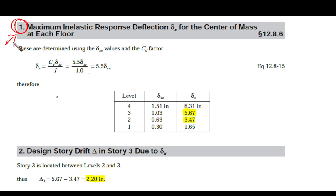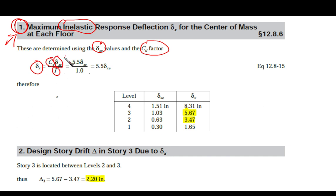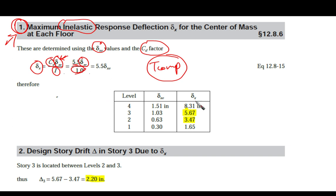For requirement 1, inelastic displacements are computed as δX = (CD/IE)·δXe = (5.5/1.0)·δXe for each floor. Applying this to the given elastic displacements yields the inelastic displacement at each of the four floor levels.